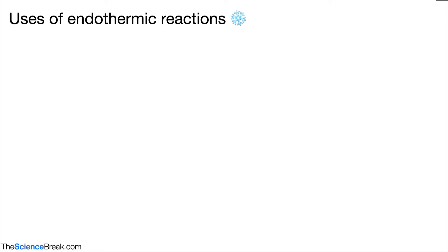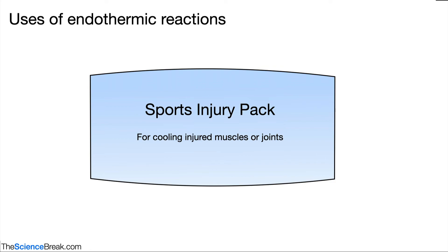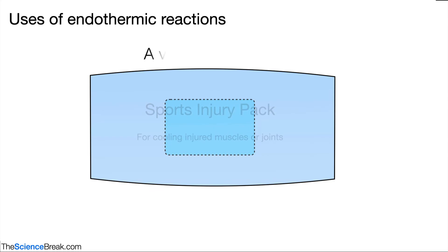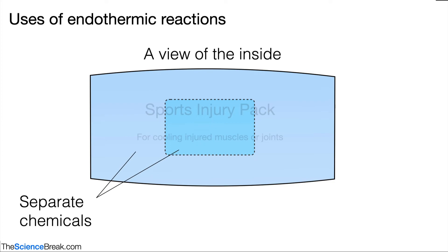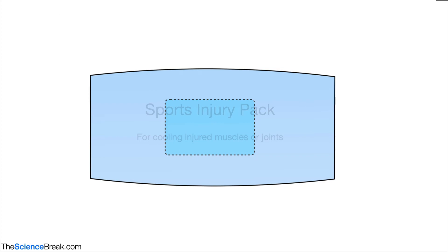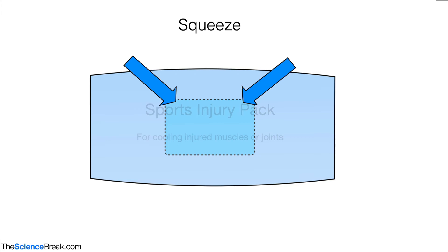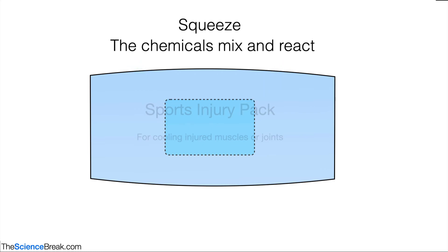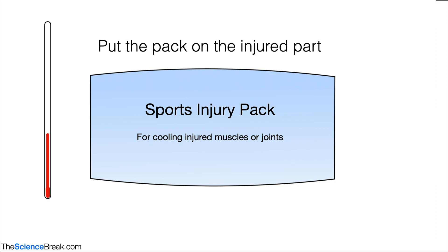What about endothermic reactions? One common example is in the use of a sports injury pack. If you injure yourself doing sports, sometimes you need a cooling pack for injured joints or muscles. Looking inside, we have two separate chemicals — one on the inner pack and one on the outer pack — chosen because they cause an endothermic reaction. When we apply some pressure or squeeze the pack, the inside pack breaks open, the two chemicals mix and react together, and we see a fall in the temperature of the pack. We can then apply this to an injured joint or muscle to help reduce pain and reduce swelling.